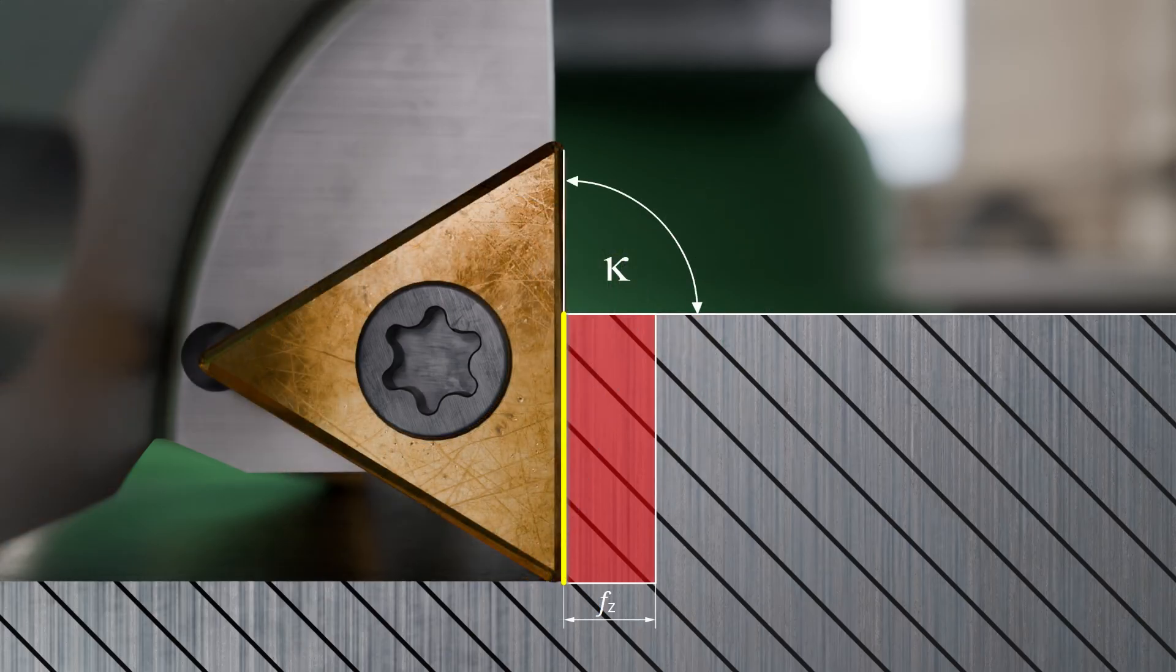Therefore, approach angles of 90 degrees are used only in exceptional cases, for example, when milling right-angled steps. In such cases, the process is referred to as corner milling.